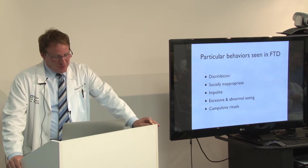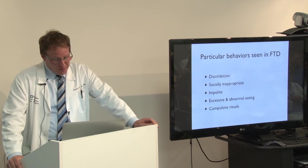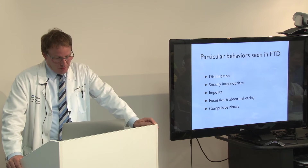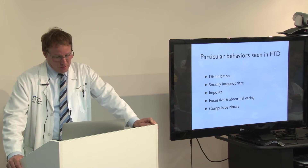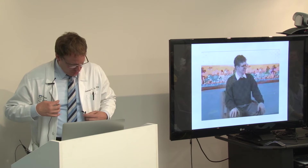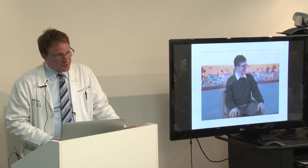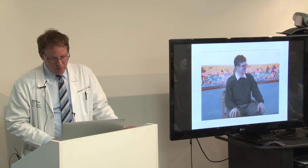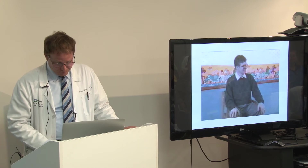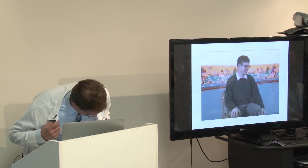I want to talk about particular behaviors we see in frontotemporal dementia. Disinhibition, which occurs from frontal lobe damage, leads to socially inappropriate behaviors and being impolite. Excessive or abnormal eating is something we also see in FTD — in fact, it's almost diagnostic of frontotemporal dementia. Eating more than before distinguishes it from all other dementias, which lead to a reduced appetite. And then funny compulsive rituals. For demonstration, here is a published case — a 54-year-old chemistry professor — from an electronic neurology textbook. It's not one of my patients.